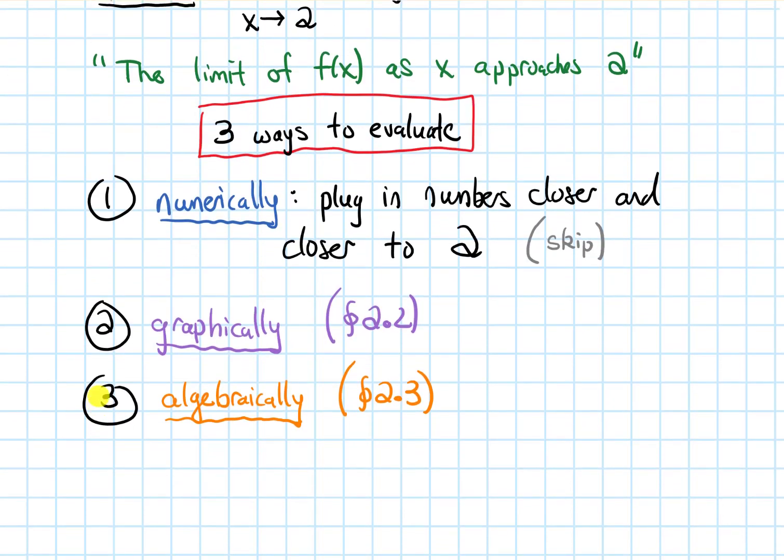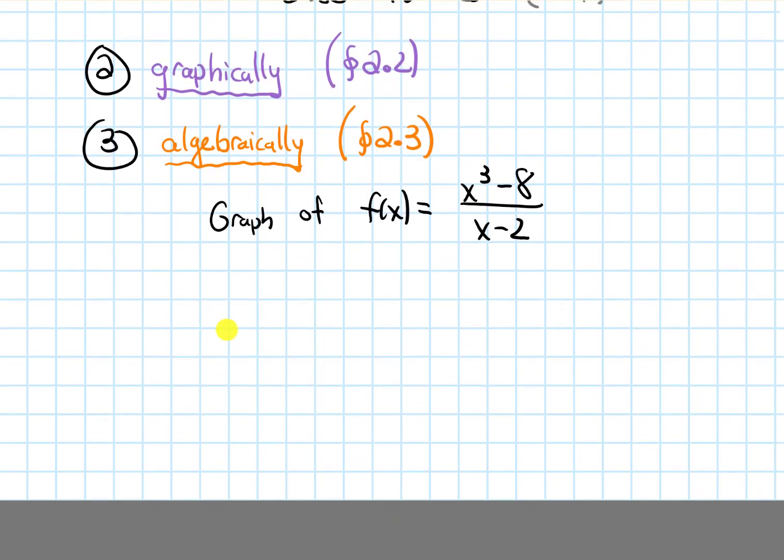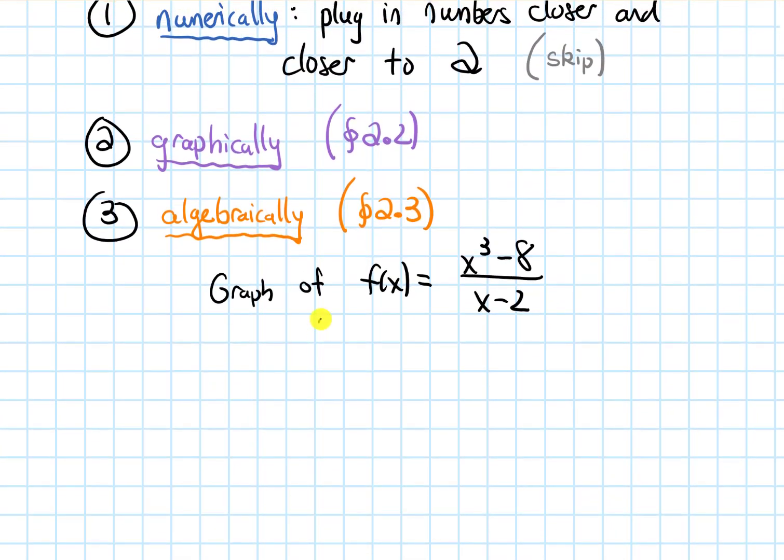In this section, we're going to focus on how to do it graphically. I'm going to give the graph of this function. f(x) is x to the third minus 8 over x minus 2. I'm going to draw some axes and tick marks: negative 1, negative 2, negative 3, positive 1, and positive 2.